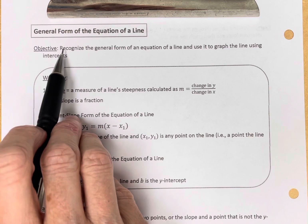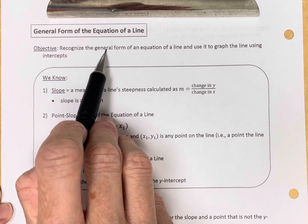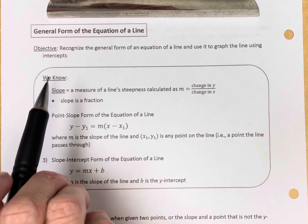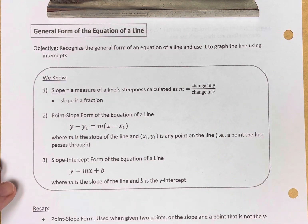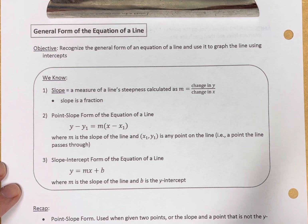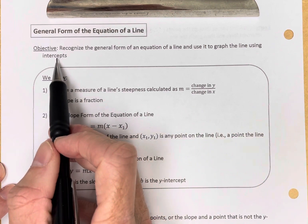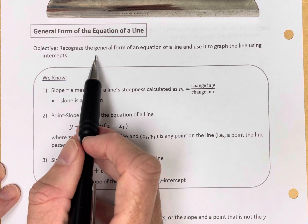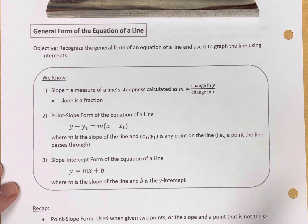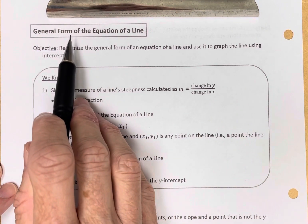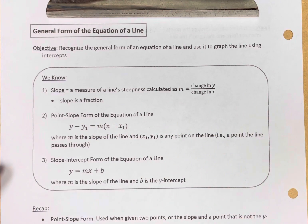Our objective: recognize the general form of an equation of a line and use it to graph the line using intercepts. So when a line is in general form, it has two primary uses. One is to graph it using intercepts, the other is useful when you're solving a system of equations using addition. We're going to be using the general form to graph the line using intercepts.